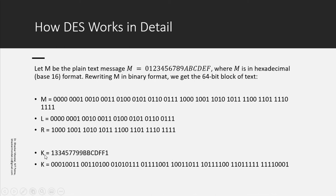In binary: 0 becomes 0000, 1 becomes 0001, 2 becomes 0010, and so on; F becomes 1111. This is your plaintext in binary format without encryption. Next, divide the plaintext into two parts — left and right — 32-bit and 32-bit. The key is given as K = 133457799BBCDFF1, also written in hexadecimal, which you need to convert to binary.